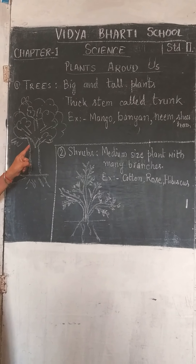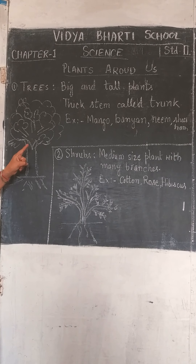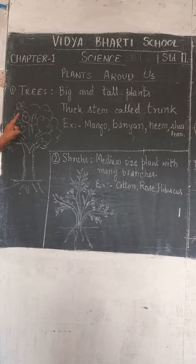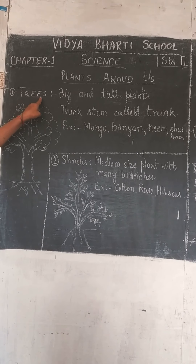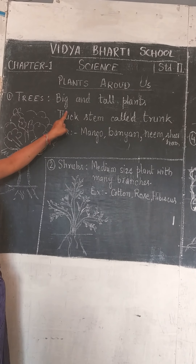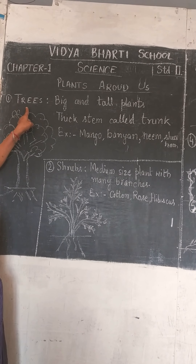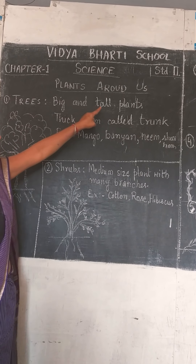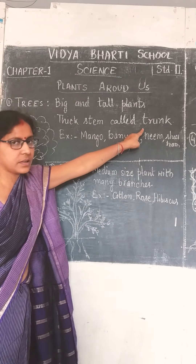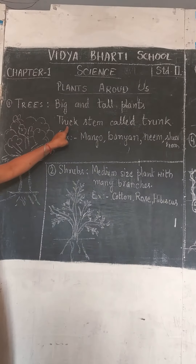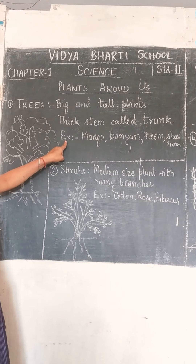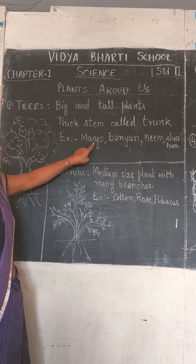पेड़ की आकृति और उसकी बनावट के हिसाब से इसे पांच भागों में बांटा गया है. सबसे पहले Tree यानि वृक्ष - big and tall plants are called trees. बड़े और लंबे पौधों को वृक्ष कहा जाता है. इनका stem जिसे trunk कहते हैं, वह बहुत मोटा होता है. For example, आपने देखा होगा - Mango tree.